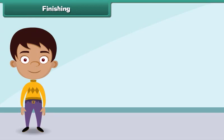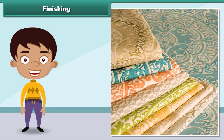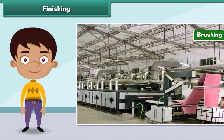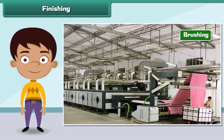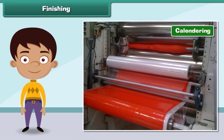The process that improves the appearance and usefulness of a fabric is known as finishing. Some important finishing treatments are: brushing, which removes short and loose fibers from a fabric; calendaring, which improves the smoothness and shine of a fabric; and bleaching, which removes the natural color of raw fabric.